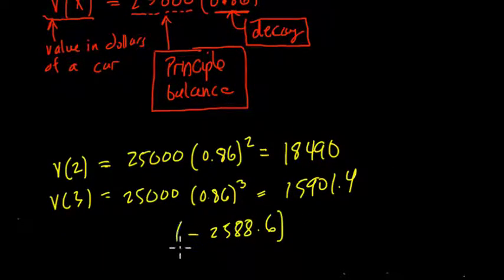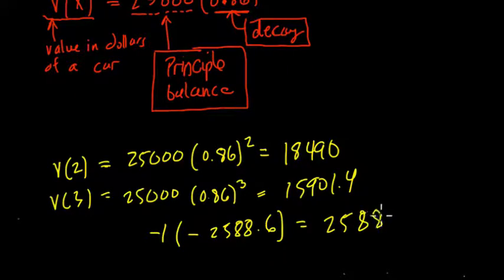that really multiply by negative 1, because if you change the order in subtraction, you switch the value, that's positive 2,588.6,